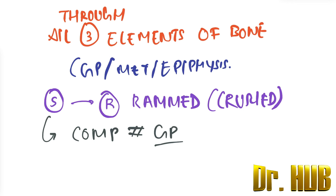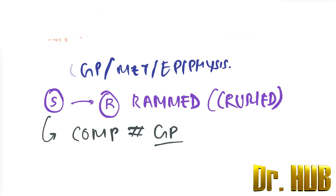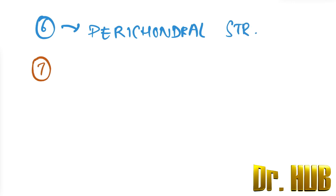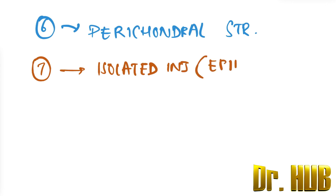There are additional types beyond the basic five. Type 6 involves injury to the perichondral structures. Type 7 is an isolated injury to the epiphyseal plate.